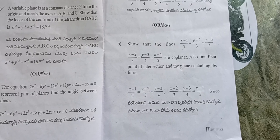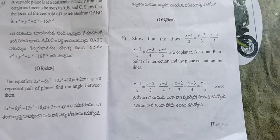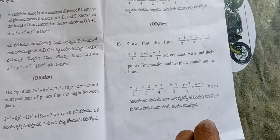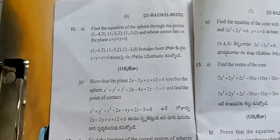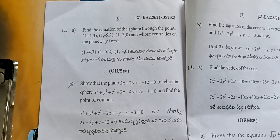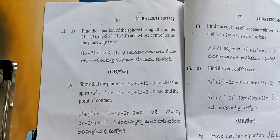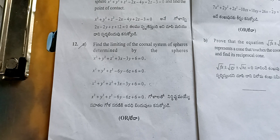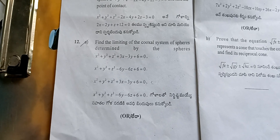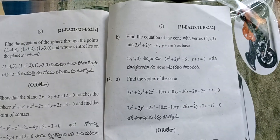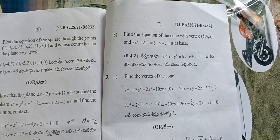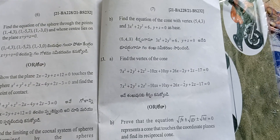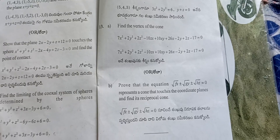Questions 10A and 10B are listed here. We have 5 units of internal choice. Then question 11, question 12A, question 12B, and question 13A are also included in section B.